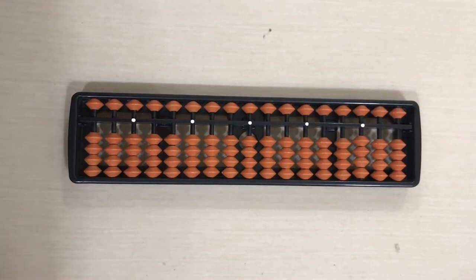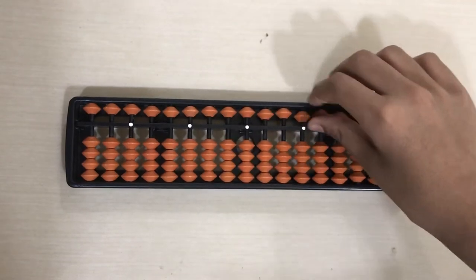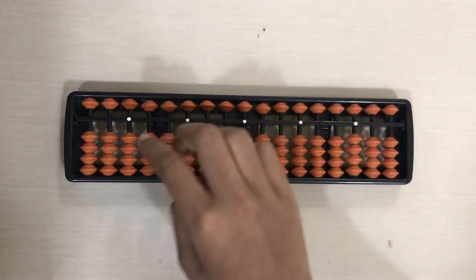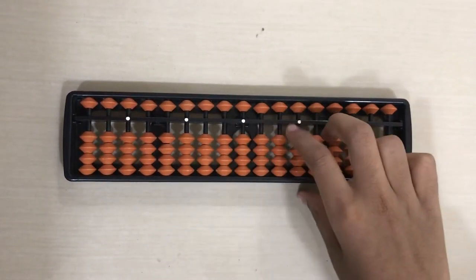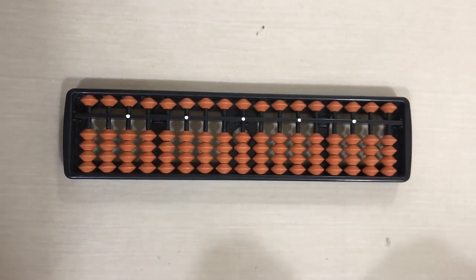The first step you need to know is the top beads. The top beads are called the upper beads or the sky beads. Their value is 5. The lower beads, their value is 1 or you can call them earth beads.